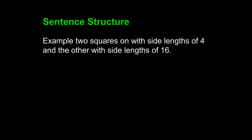Let's take a look at this one sentence: 'Example, two squares' — I assume that 'on' means 'one' — 'with side lengths of 4 and the other with side lengths of 16.' Not only does this sentence lack a clear sentence structure, but it is a sentence fragment. It must be revised.